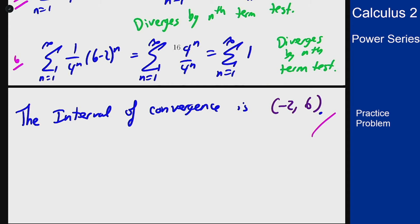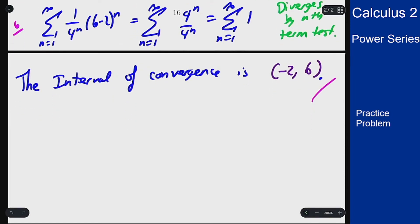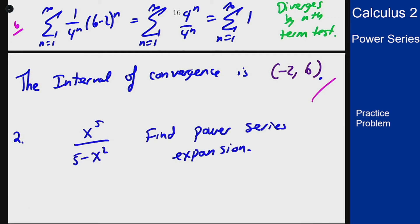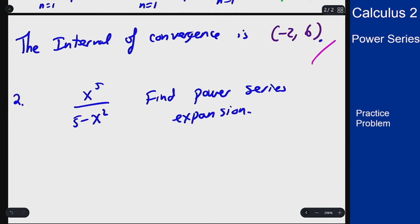Even though neither endpoint worked, we still had to check them because they could have worked for a different power series. Now for part 2, we want to find a power series expansion of the function x^5 / (5-x^2). The main trick is to use a power series expansion that we already know. The one that looks like this expression is 1/(1-x).